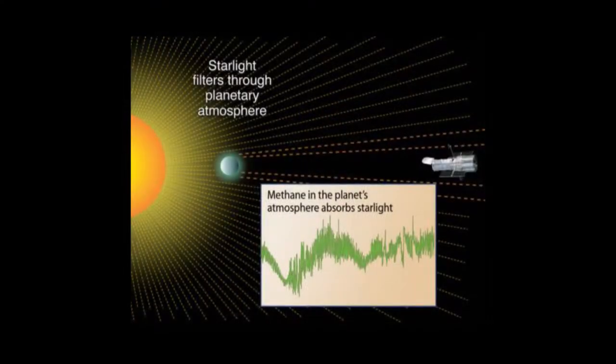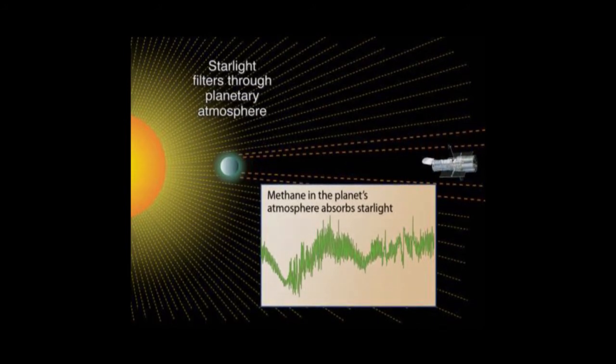At the beginning we focused on the big planets — the Jupiters — because they were the easiest to detect. Basically what we do is use a transit technique. When the planet crosses in front of the star, part of the light from the star goes through the atmosphere of the planet and acts like a filter — it filters the light at the wavelengths where the molecules in the planet's atmosphere interact with the photons.